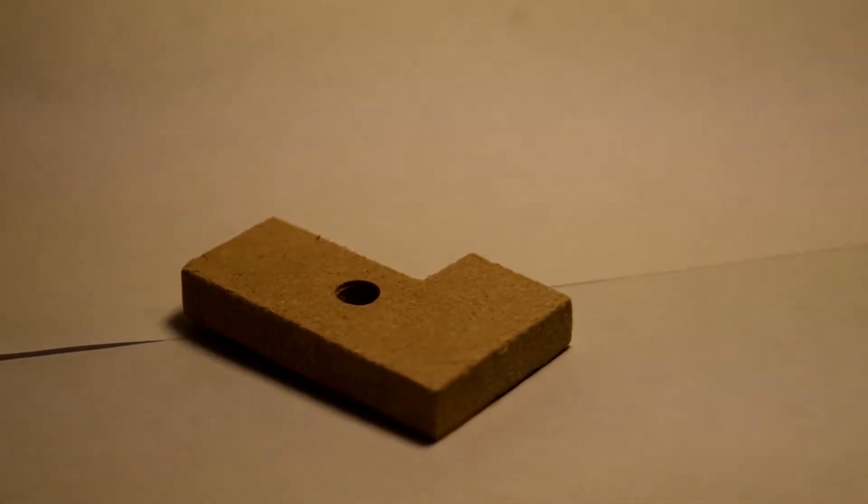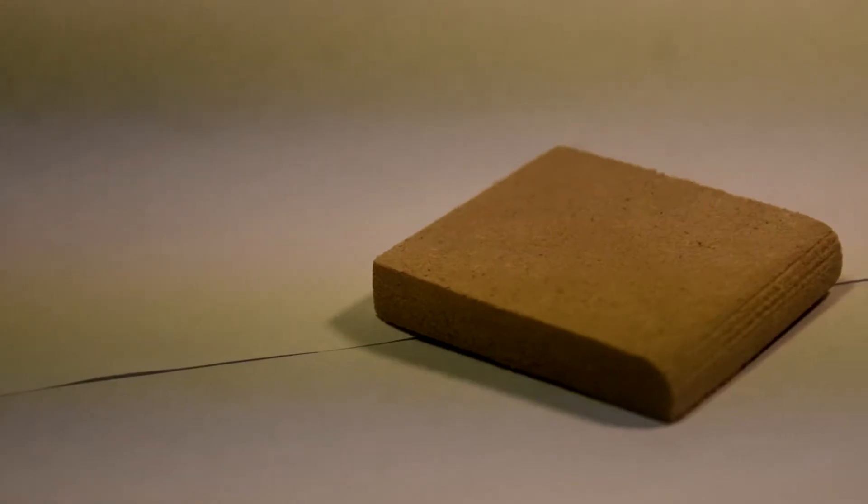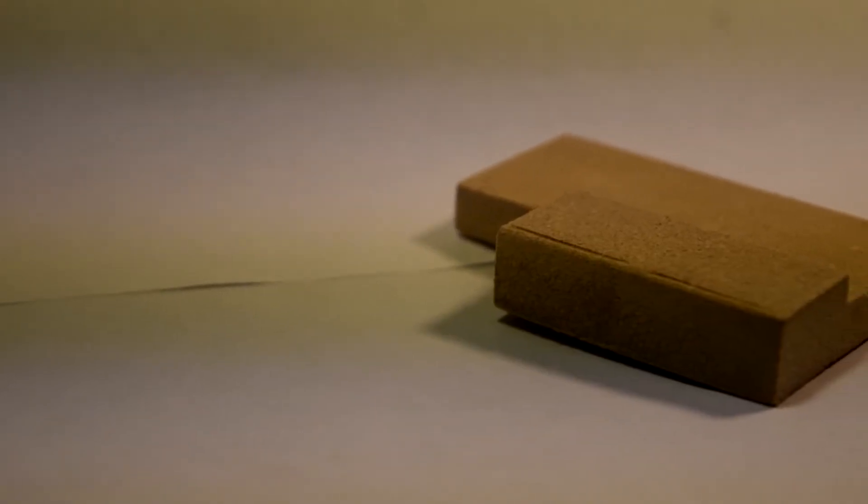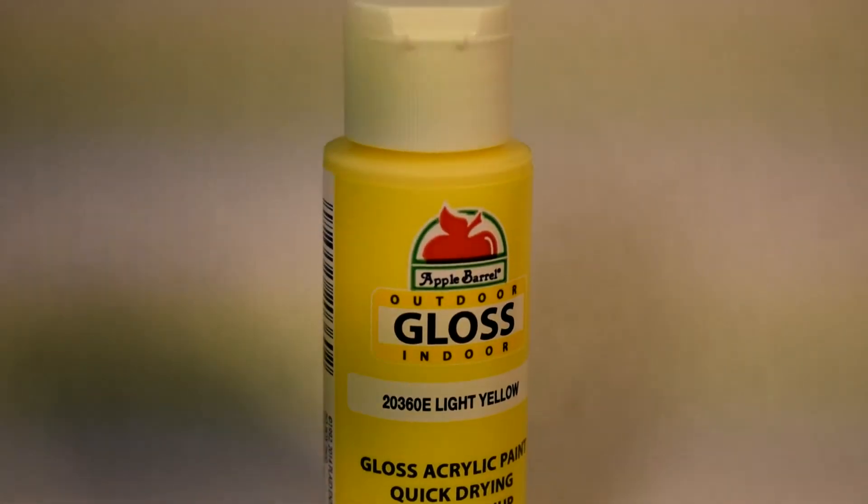I first collected my materials: the CNC routed pieces of plywood, a can of green spray paint, a can of shellac, a little bottle of yellow acrylic paint, some 150 through 400 grit sandpaper, a bottle of wood glue, and a sander.